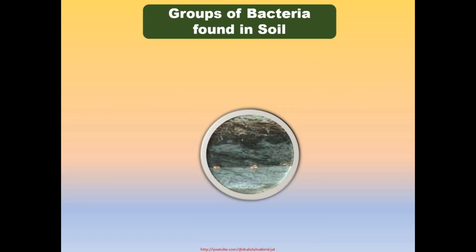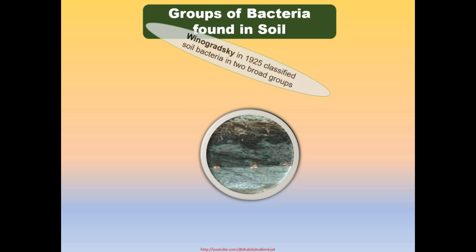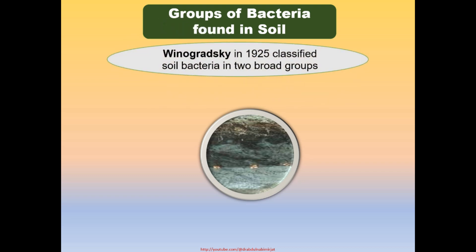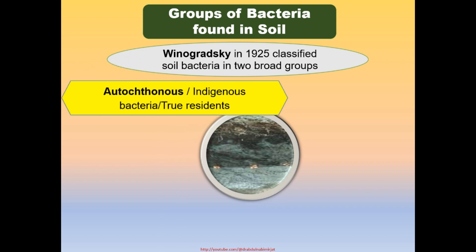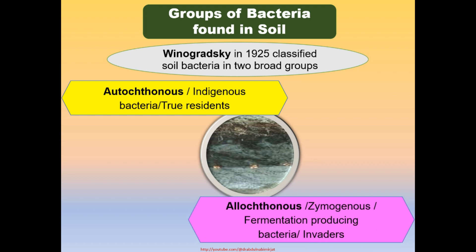Groups of bacteria found in soil: In 1925, Winogradsky classified soil bacteria into two broad groups — Autochthonous and Allochthonous. Autochthonous soil bacteria are known as the true residents in soil. These are long-surviving and help in biological functions. These bacteria derive their nutrients from the organic fraction of the soil with no external source of energy.